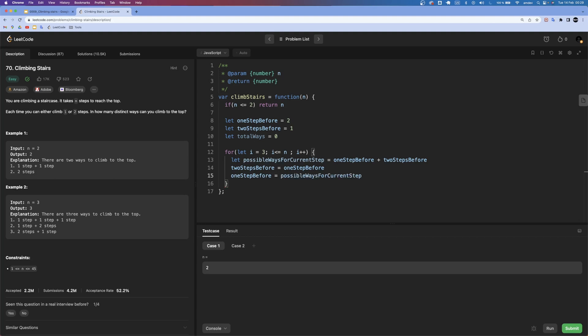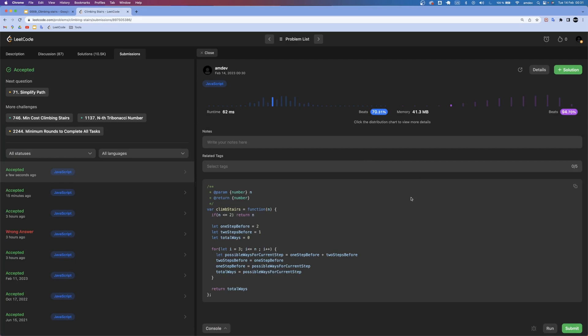Lastly we need to assign possibleWaysForCurrentStep to the totalWays in order to update that, and at the end we will return it. So we will do: totalWays is going to be possibleWaysForCurrentStep, and return totalWays. And now if I run this, everything is passing, and if I submit we have a constant space solution here.